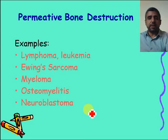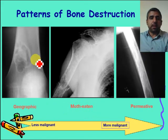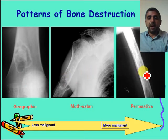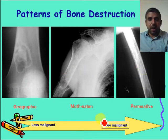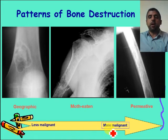As a summary, bone tumors can show geographical, moth-eaten, or permeative bone destruction, pointing from less malignant to more malignant kinds of bone tumors.